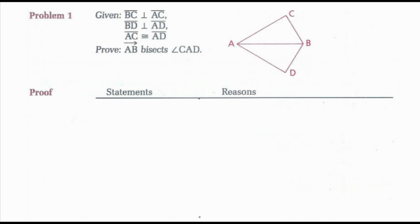I have segment BC is perpendicular to segment AC, which would give me angle C being a right angle. Segment BD is perpendicular to segment AD, which would tell me angle D is a right angle. I have AC congruent to AD. These are the legs of the right triangle, so now I need the hypotenuse to be congruent. If I can show the hypotenuse is congruent, then I would have HL.